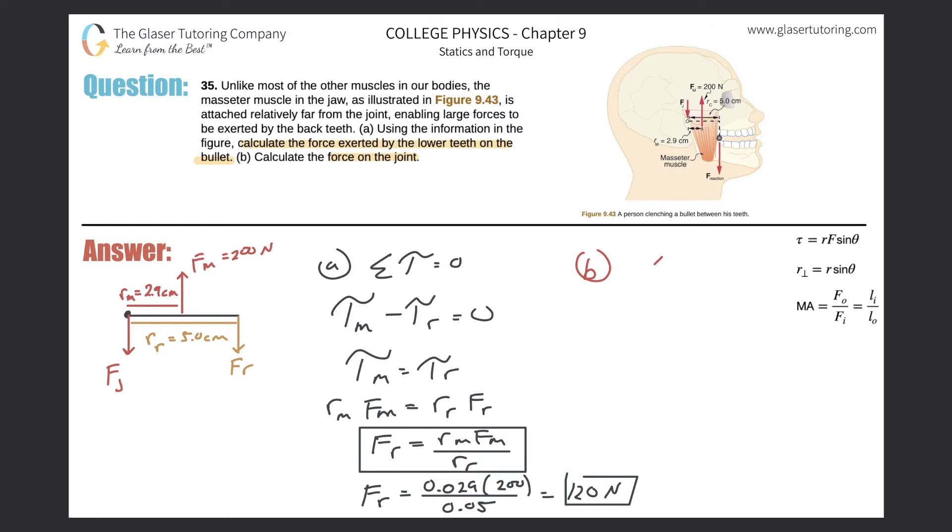This is simple. The sum of the forces equals zero. Three forces: one's pointing up, two are pointing down. Up is positive, down is negative. We get an algebraic expression: force of the masseter muscle minus the force at the jaw joint minus the reaction force should equal zero.